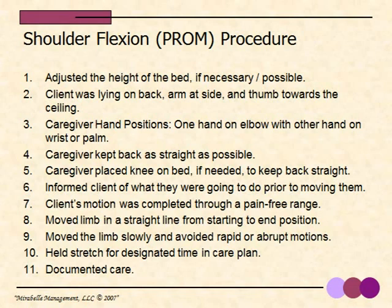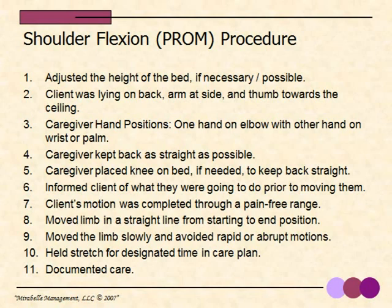Let's review the process for shoulder flexion. First, adjust the height of the bed if necessary or possible. Two, the client is lying on their back, arm at side, and thumb toward the ceiling. Three, caregiver hand positions: one hand on elbow, the other on the wrist or palm. Four, the caregiver kept their back as straight as possible. Five, caregiver placed knee on the bed if needed. Six, informed the client of what they were going to do prior to moving them. Seven, motion completed through a pain-free range. Eight, move the limb in a straight line. Nine, move the limb slowly and avoid rapid or abrupt motions. Ten, hold the stretch for the designated time in the care plan. Last, document the care.